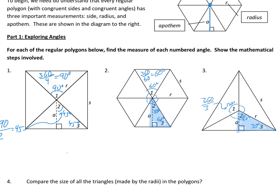Notice when we draw triangles made by all the radii, we get four congruent triangles for a square, six congruent triangles for a hexagon, and three congruent triangles for a triangle. So if we want to find the area of one of these polygons, all we have to do is find the area of one triangle and multiply it by the number of sides. That's our strategy.